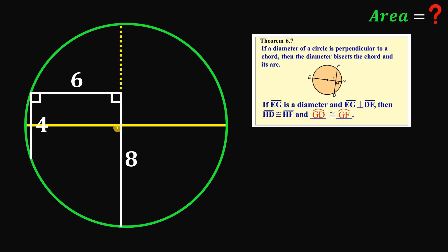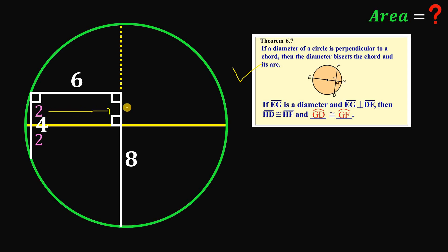Since this chord and this segment of eight units are parallel, they are both perpendicular to the diameter of the circle. Applying this theorem, we can break the four-unit chord into two equal parts — two units and two units. This forms a rectangle, which means the opposite side also measures two units.